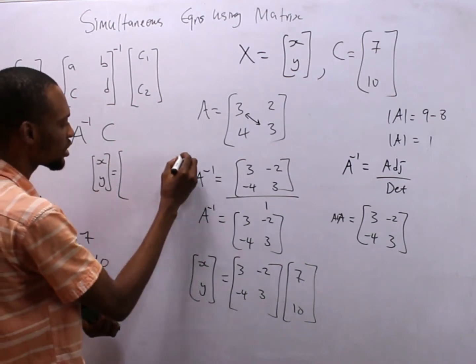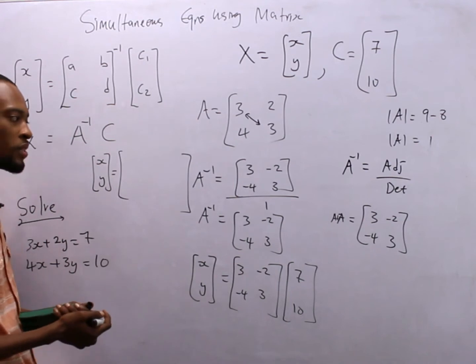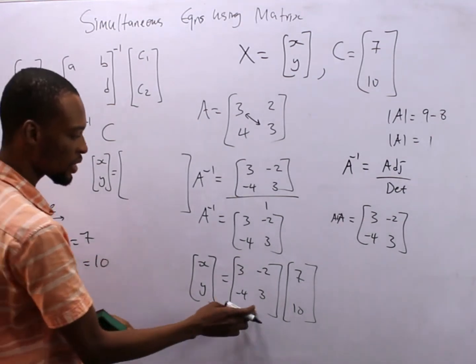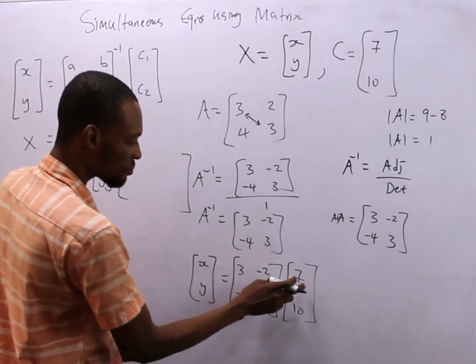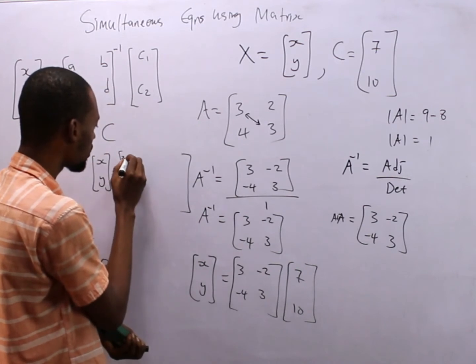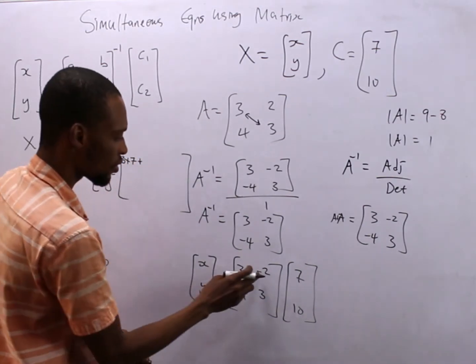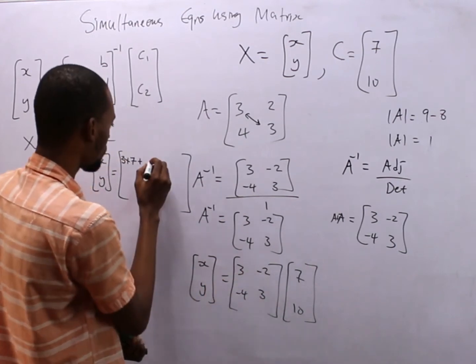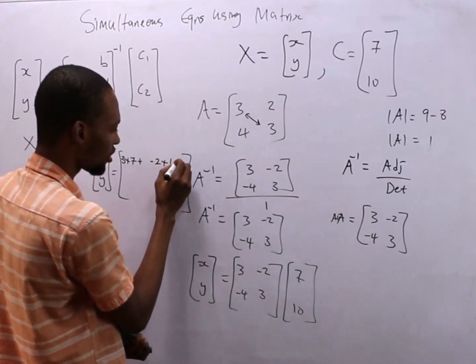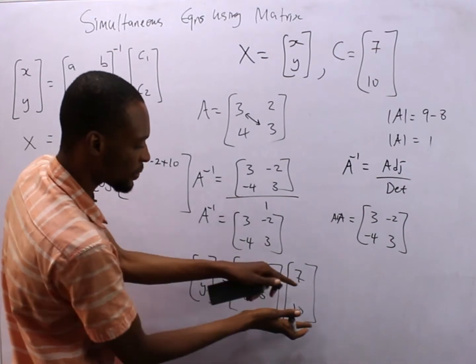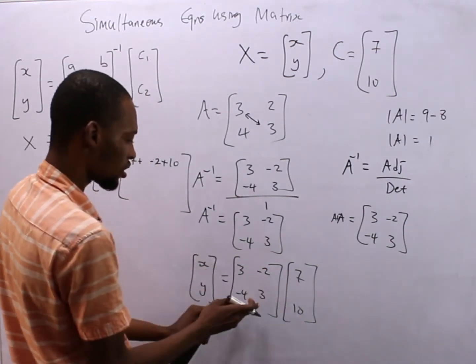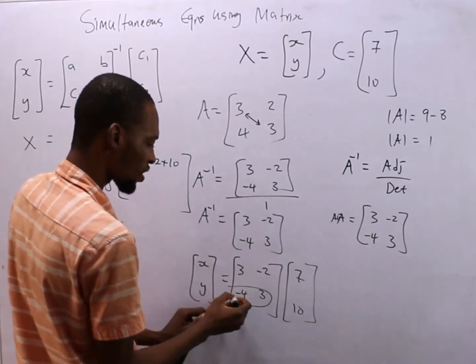If you don't understand multiplication, you can check my matrix multiplication video. So we have this, we have this. 3 times 7 plus minus 2 times 10. So we use this column to multiply this row. We are done, then we come to this second one.